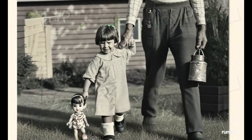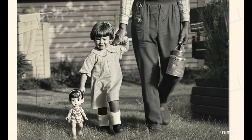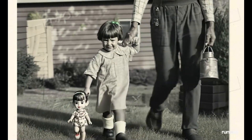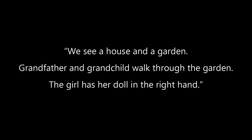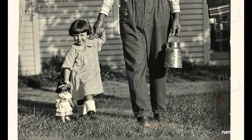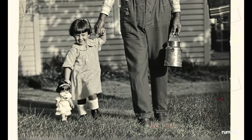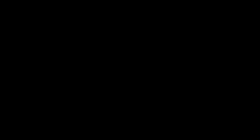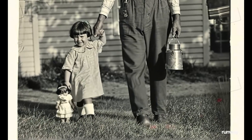So I try photographs from somebody else. Let me try a third prompt for this photo from 1923. We see a house and a garden. Grandfather and grandchild walk through the garden. The girl has her doll in the right hand. Now things get absurd — certainly an inspiration for a story. The man walks backwards, the child forward. Is this possible physically and anatomically? It doesn't matter really. It's a fantasy. Let's try the next image.